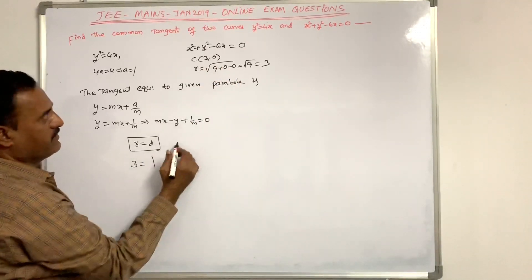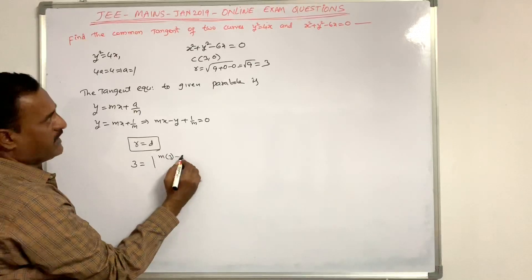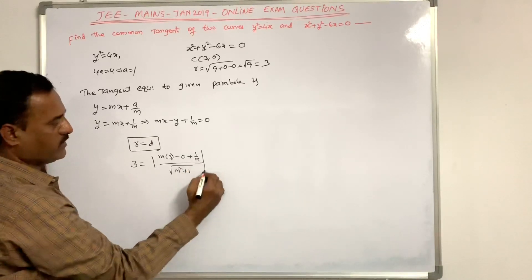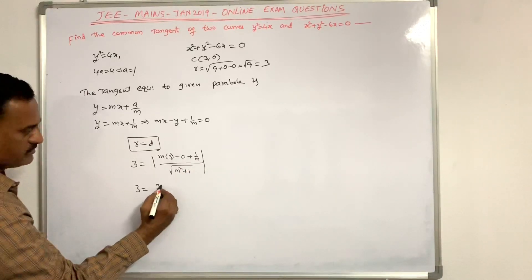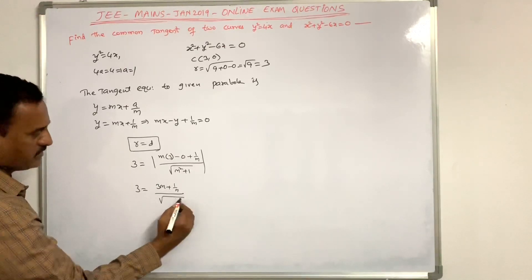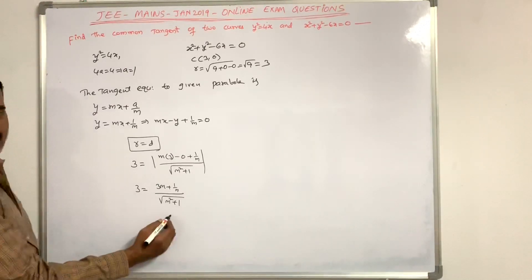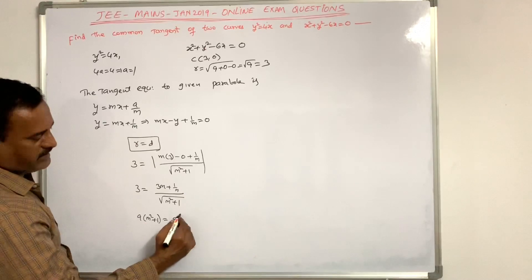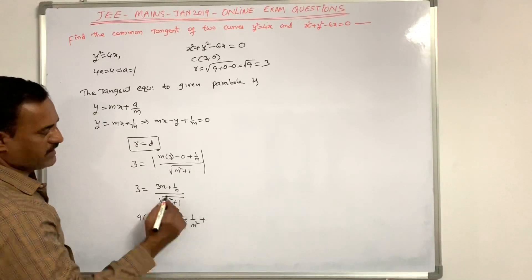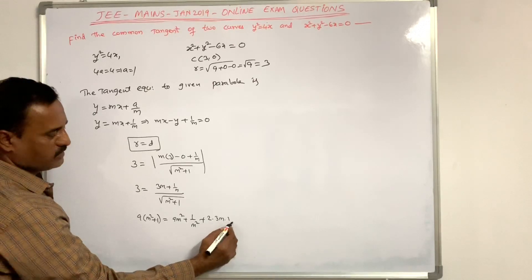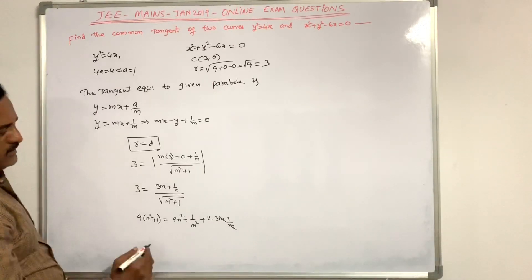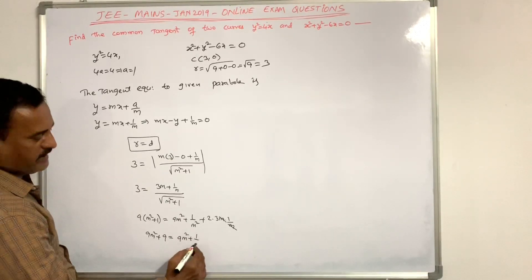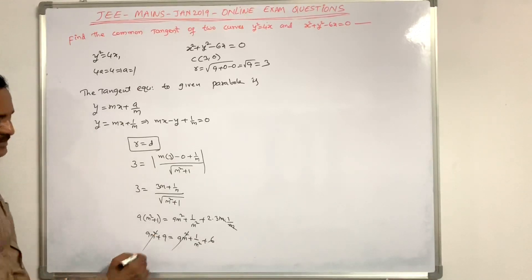The perpendicular distance from center (3, 0) to the line mx - y + 1/m = 0 is |3m + 1/m| / √(m² + 1). Setting this equal to 3: 3 = |3m + 1/m| / √(m² + 1). Cross-multiplying and squaring: 9(m² + 1) = 9m² + 1/m² + 6. Cancelling 9m² from both sides: